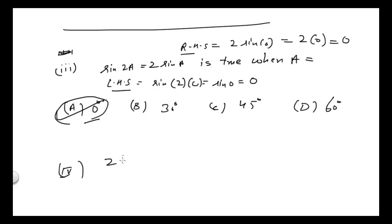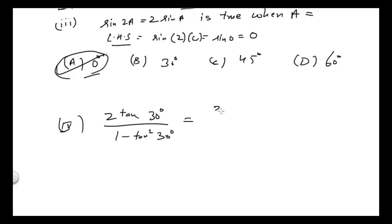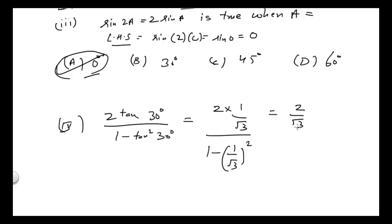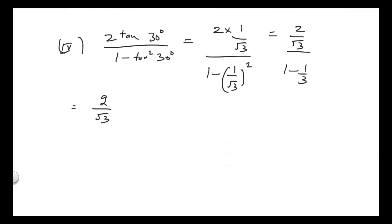For the fourth part, we have 2 tan 30° divided by 1 minus tan² 30°. I will find the value of this expression. Substituting tan 30° = 1/√3, I write 2 times 1/√3 in the numerator, and 1 minus (1/√3)² = 1 minus 1/3 in the denominator. This gives 2/√3 divided by 2/3.